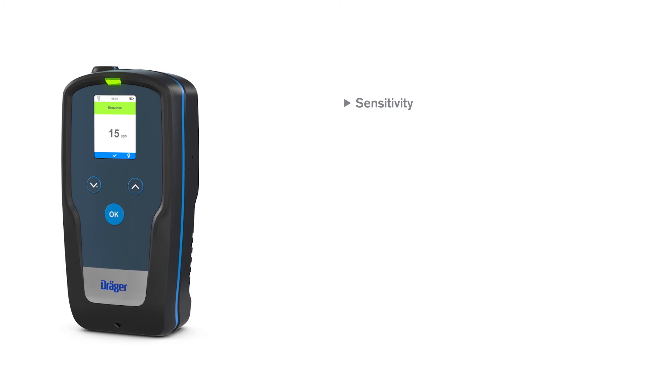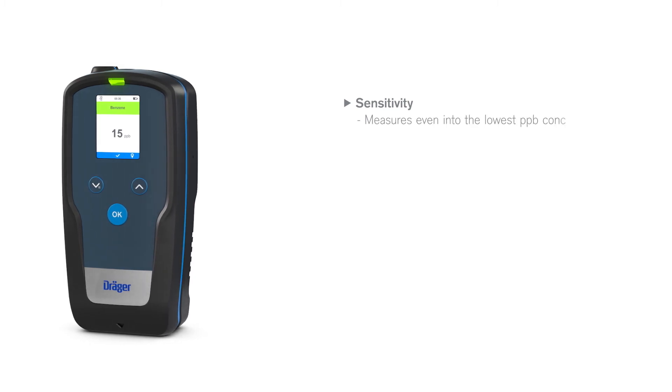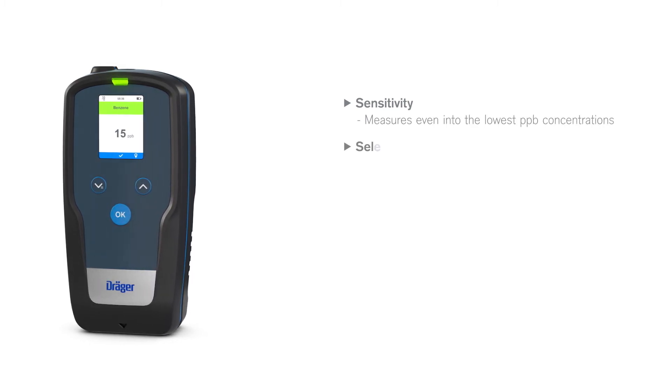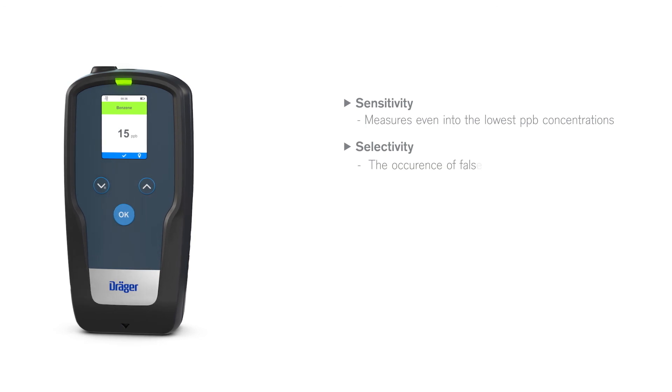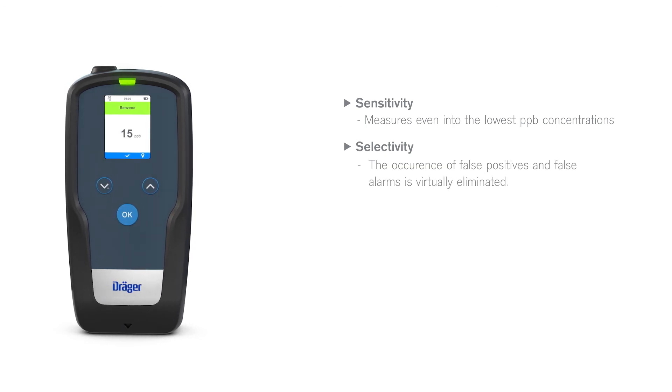Your advantages: Sensitivity - measures even into the lowest PPB concentrations. Selectivity - the occurrence of false positives and false alarms is virtually eliminated.